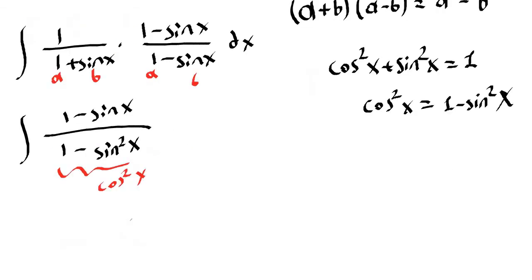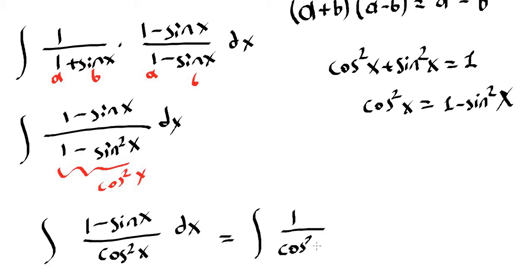Now let's rewrite the integral. We have 1 minus sine of x on the numerator and cosine squared of x on the denominator. Now we have cosine squared of x as our common denominator so we can separate the integral: 1 over cosine squared of x minus integral of sine x over cosine squared of x.